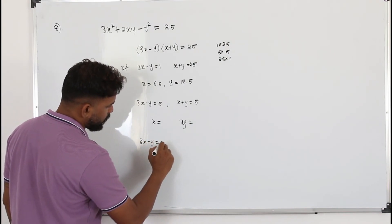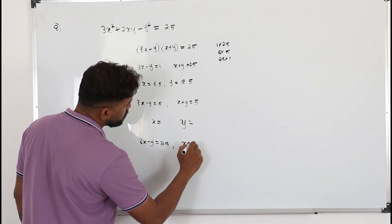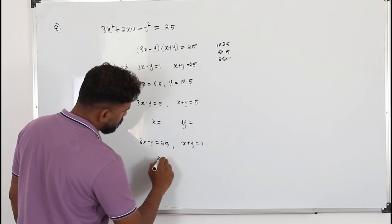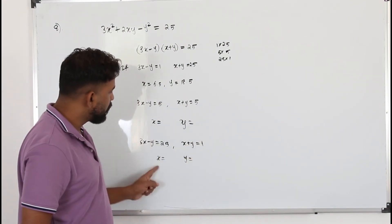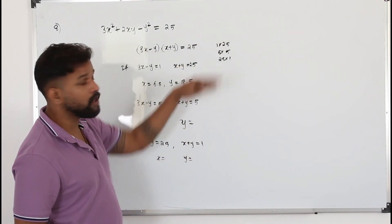Take it as 3x minus y is 25 and x plus y is 1. Find x and y. If you get decimal numbers here also, we have considered all the cases.